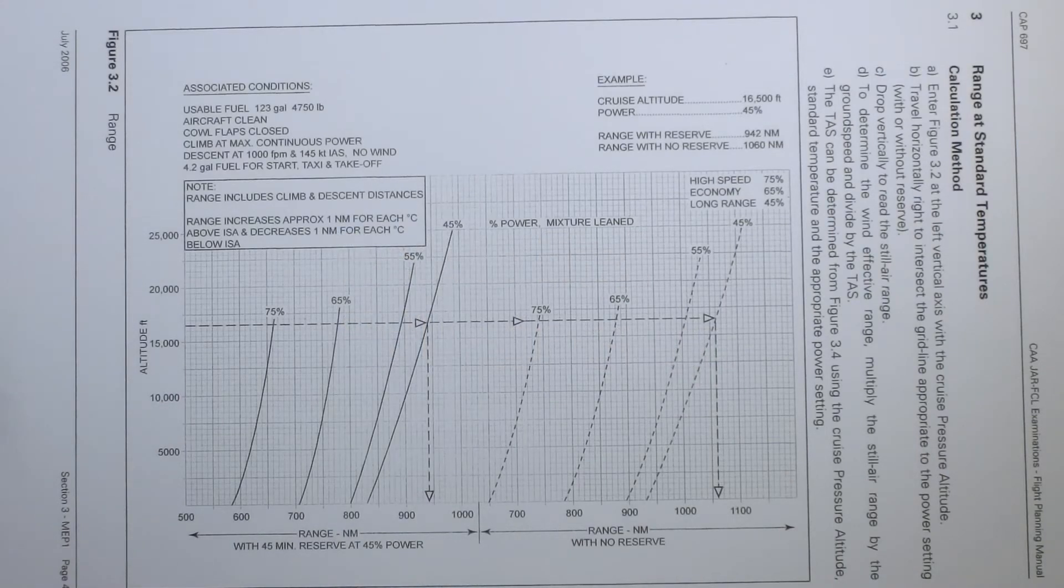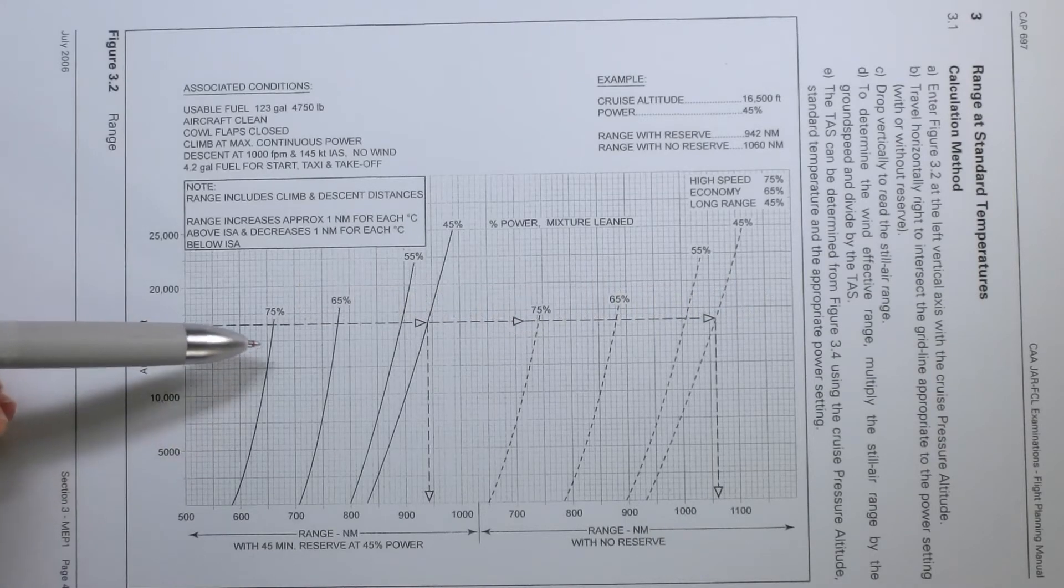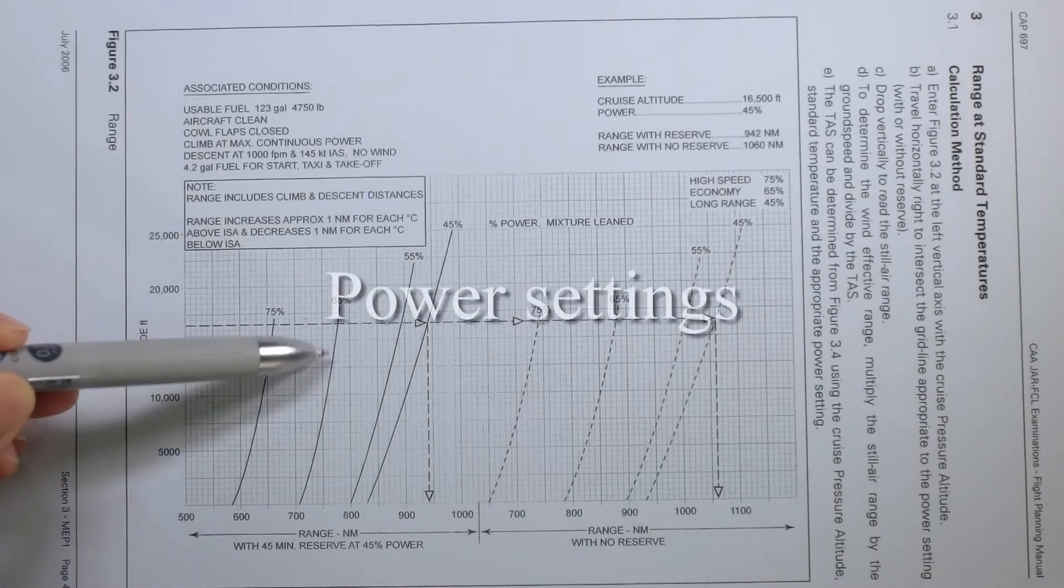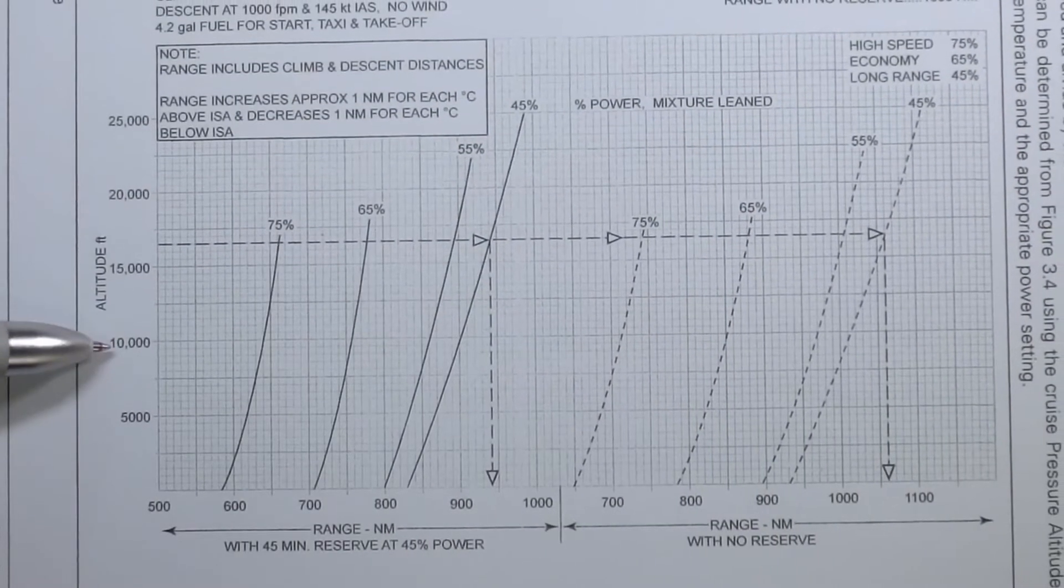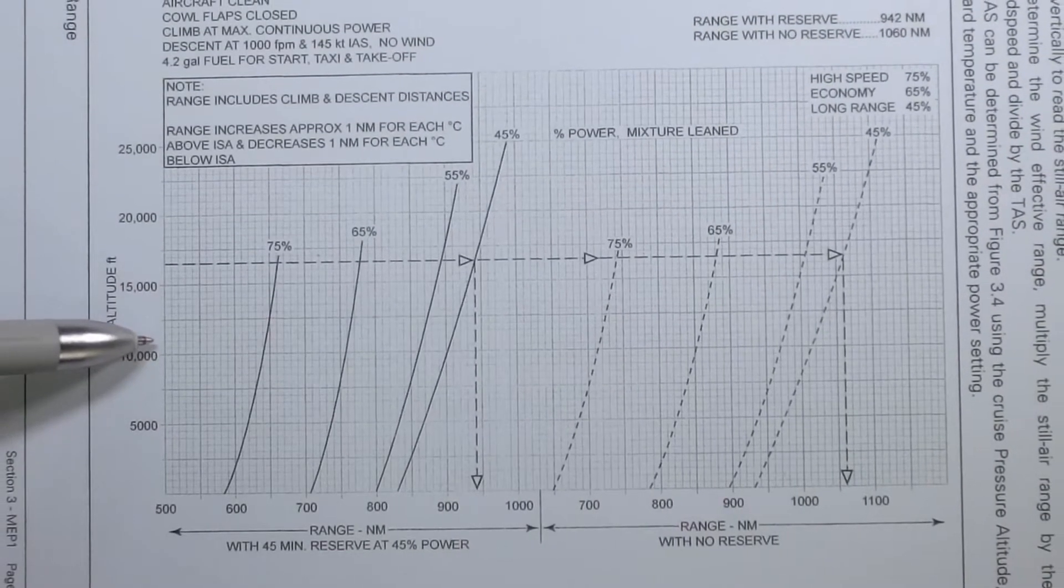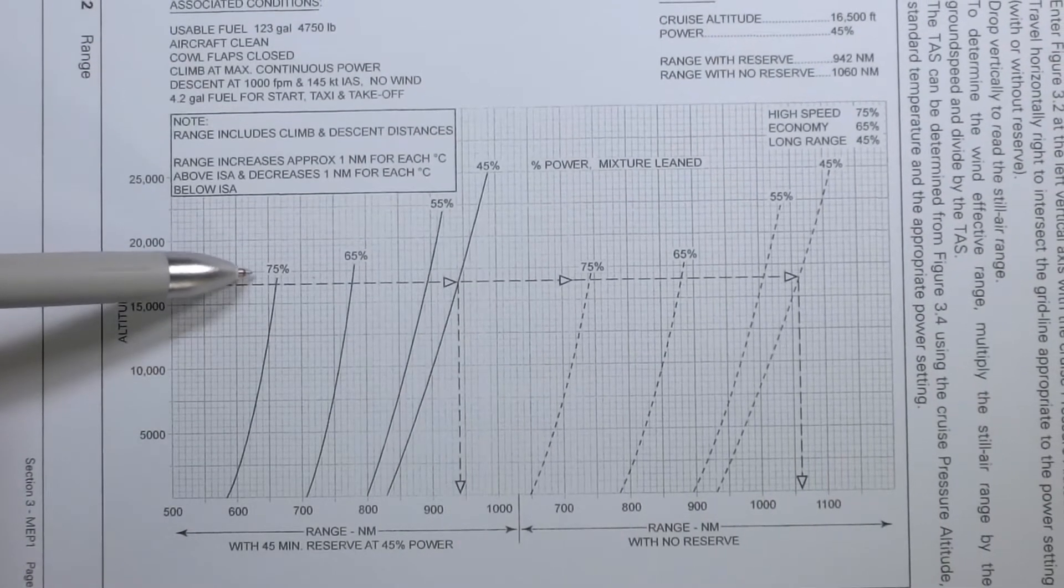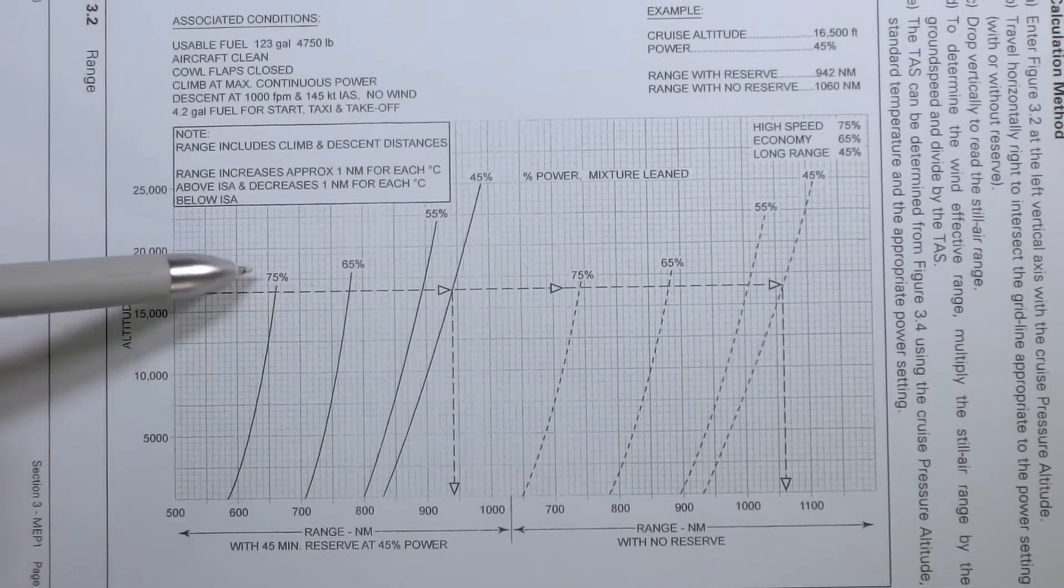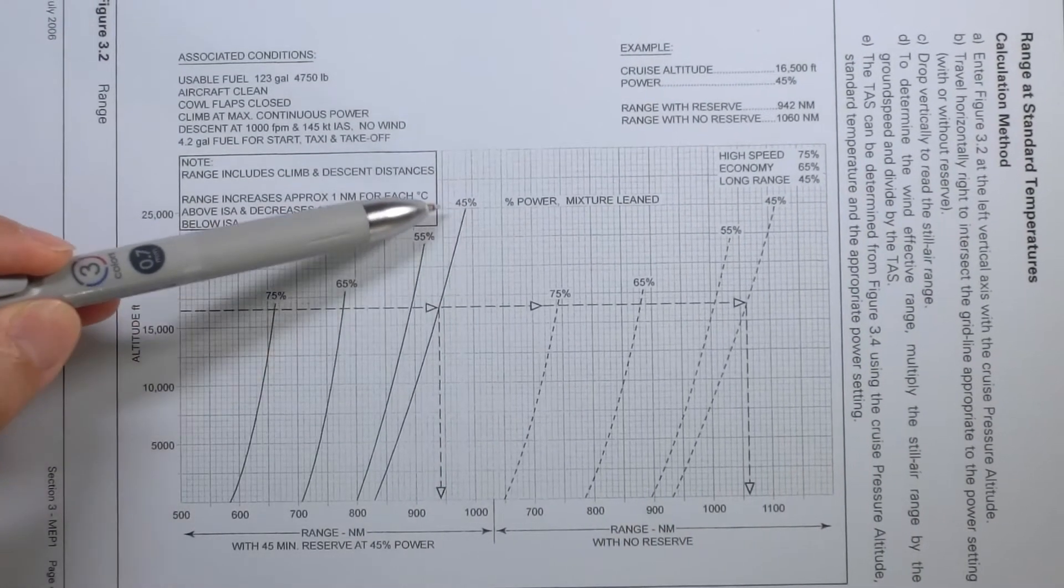We shall first determine what the still air range is. In order to figure out what our still air range is, we first need to know which altitude we plan to cruise at, and then we need to know what our power setting is going to be. For example, I have got altitudes 5,000, 10,000, 15,000 feet. And to get the values in between, you will have to count the squares for the altitude that you want. Then we have various power settings: 75%, 65%, 55%, and 45%.